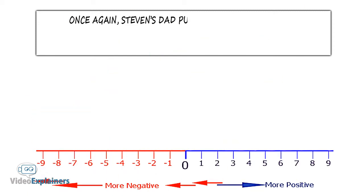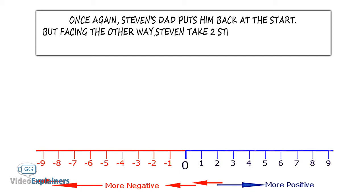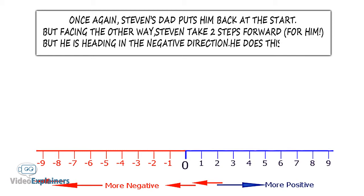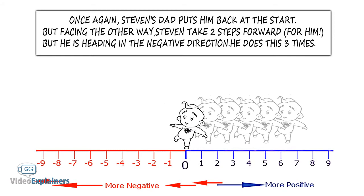Once again, Stephen's dad puts him back at the start but facing the other way. Stephen takes two steps forward for him but he is heading in the negative direction. He does this three times.